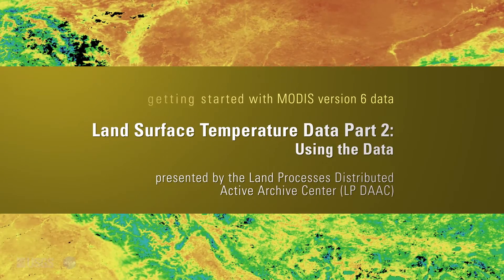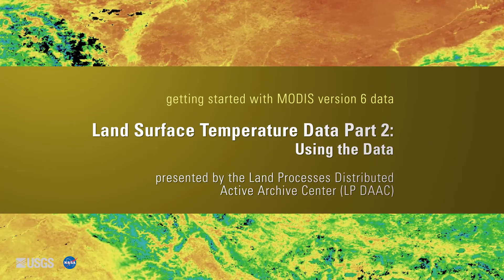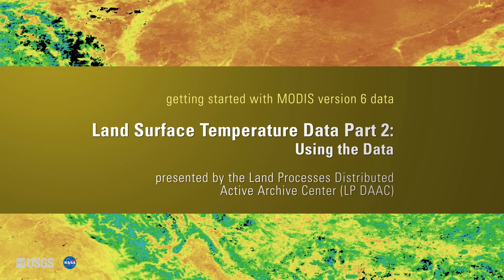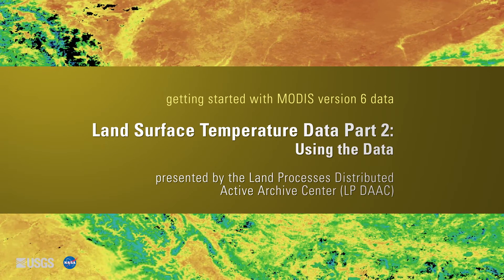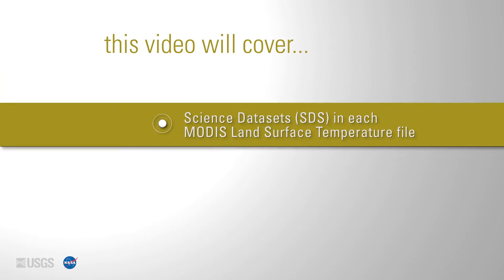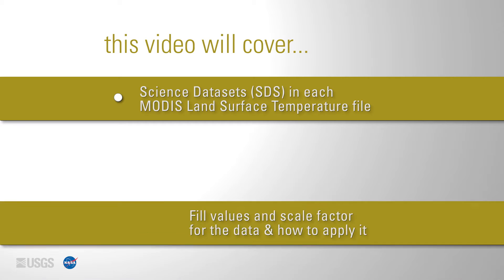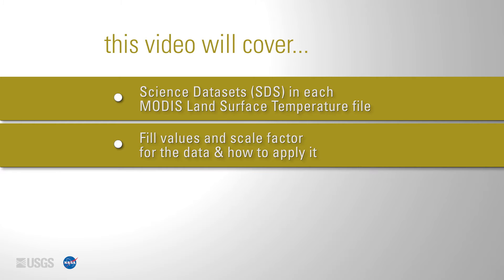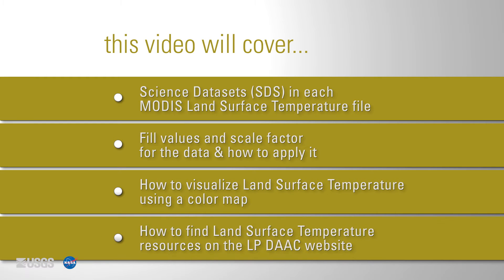Getting started with MODIS version 6 land surface temperature data, part 2, presented by the Land Processes Distributed Active Archive Center, or LP DAAC. This is part 2 of the getting started with MODIS version 6 land surface temperature data video series. This video will cover the science datasets (SDSs) in each MODIS land surface temperature file, the fill values and scale factor for the data and how to apply it, how to visualize land surface temperature using a color map, and how to find land surface temperature resources on the LP DAAC website.